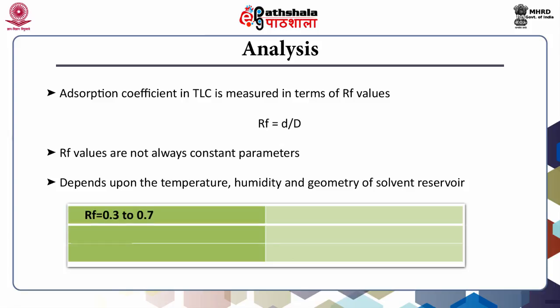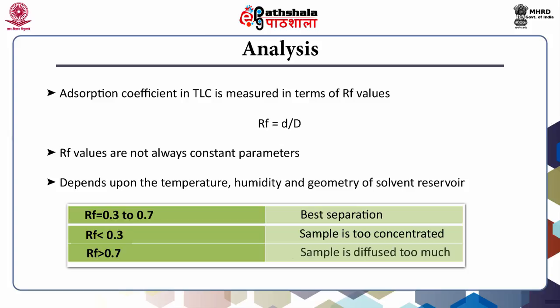If the Rf value is between 0.3 and 0.7, it gives the best separation. If the Rf value is less than 0.3, the sample is too concentrated and needs to be diluted. If the Rf value is more than 0.7, it means the sample has diffused too much.